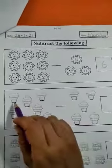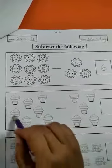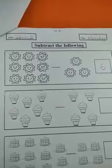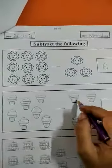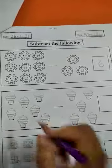In the same manner, you have to count. 1, 2, 3, 4, 5, 6, 7. We have 7 ice creams and now we have to cut 5. 1, 2, 3, 4, 5. So you have to cut 5, and then how many will be left? You have to write the answer over here.